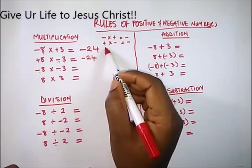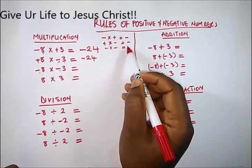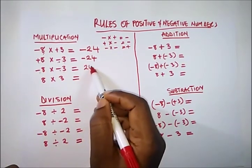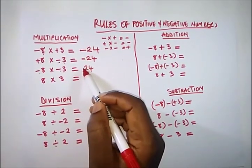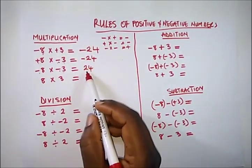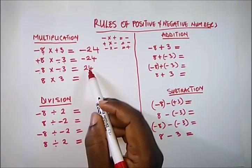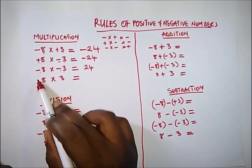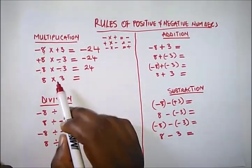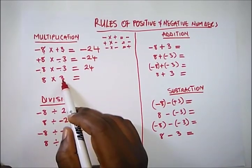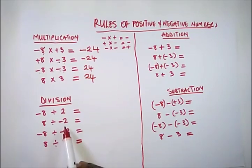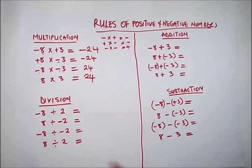When you have a minus multiplying a minus, you get a plus, so that gives us positive 24. You don't need to write a plus sign in front of it — a number without a sign is positive. And a plus multiplying a plus is also plus, so 8 times 3 gives us 24.